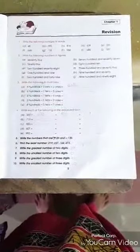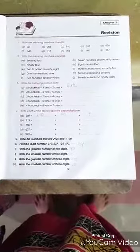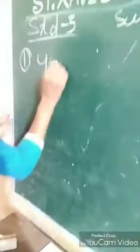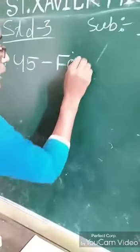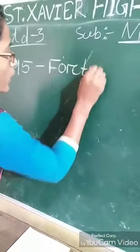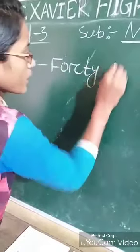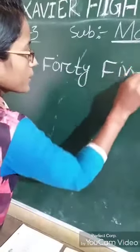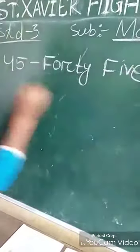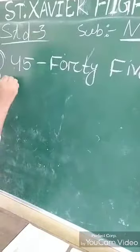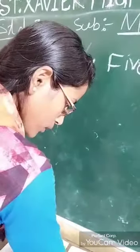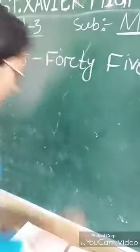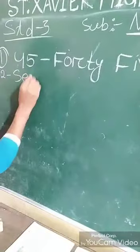Number 1: Write the following numbers in words. That means 45 — FORTY FIVE. Number 2: Write the following numbers in figures. 74.